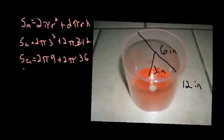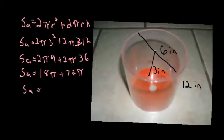So now I can do some more multiplication. So surface area equals 2 times 9 is 18, so I've got 18π plus 2 times 36 would be 72π. So if I have 18 pi's and 72 pi's, I can add those up to get 90π.